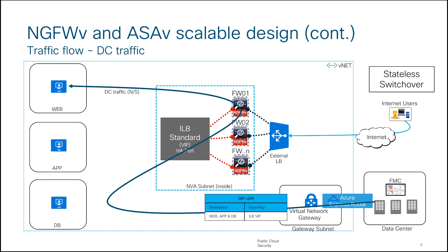Another use case is traffic coming from your data center. If you have an Express Route connection from your data center to Azure, you can apply a UDR on the gateway subnet and forward traffic to the internal load balancer. This gives you a single set of firewalls — multiple firewalls — handling both your internet traffic and your east-west traffic.